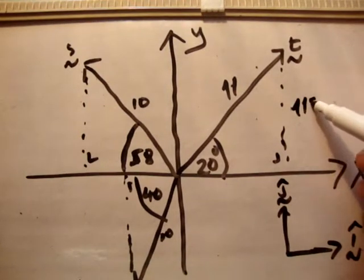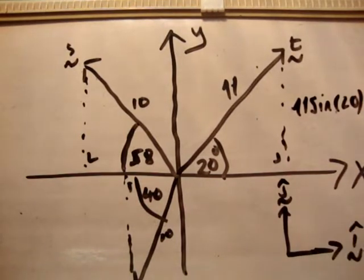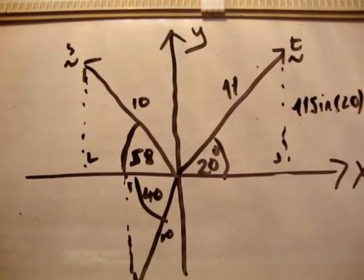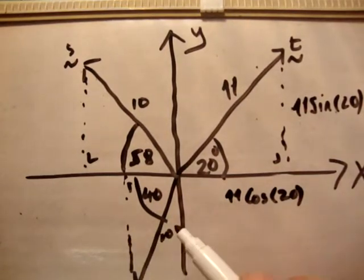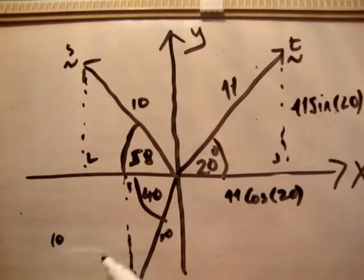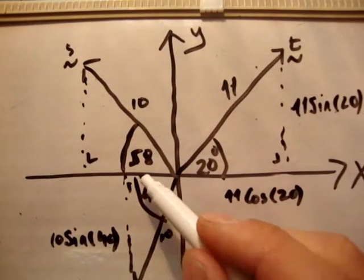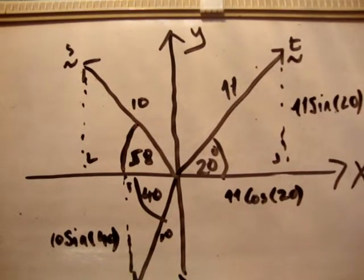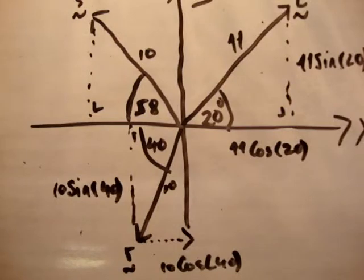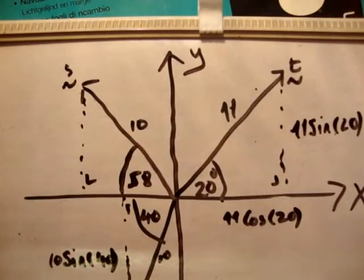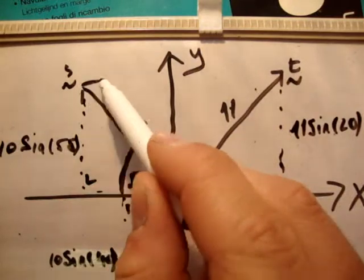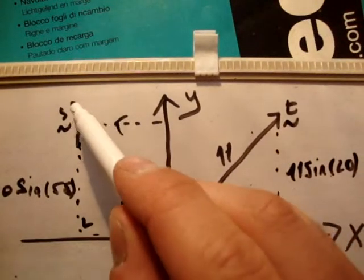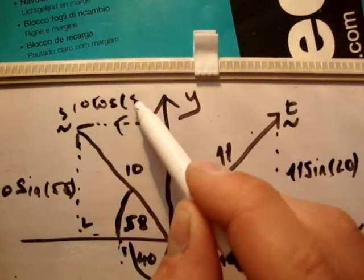But this one here is 11 sine 20. This one here, I'm going to rub out my unit vector definitions just because things are getting a bit cluttered, 11 cosine of 20. This one here is 10 times, now it's opposite of 40, sine of 40. Now I'm going to move this vector down here. That's 10 times the cosine of 40 like that. Similarly up here, this one here is opposite 58, so we have 10 times the sine of 58. And move this vector up here, make sure we have the correct direction, and we have 10 times the cosine of 58.